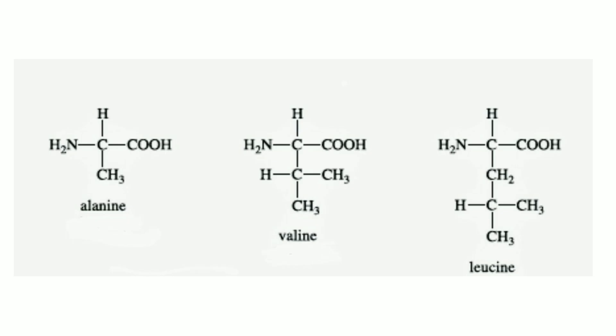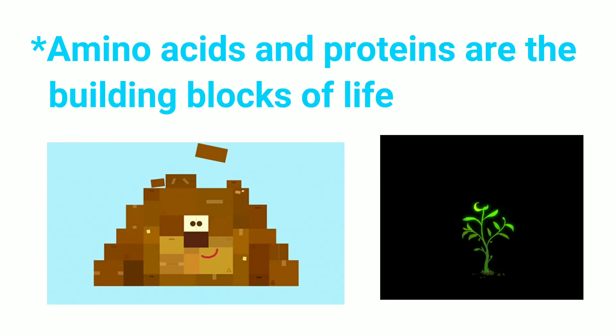These are three examples of amino acids: alanine, valine, and leucine. As you can see, the side chain R is different for all three. Two or more amino acids combined together can form proteins, so amino acids and proteins are basically the building blocks of life.